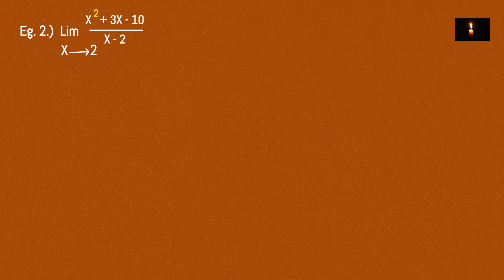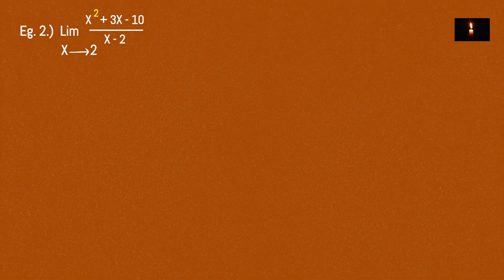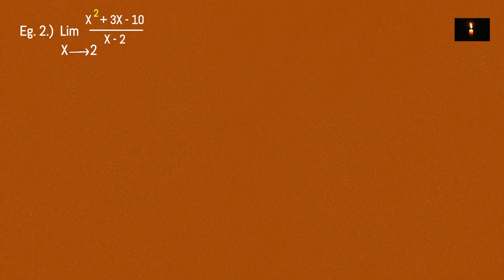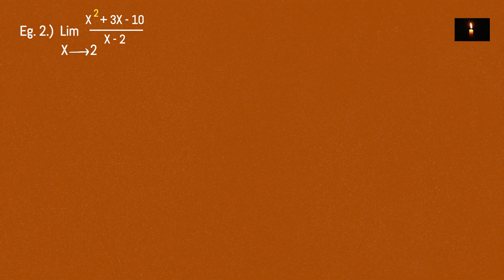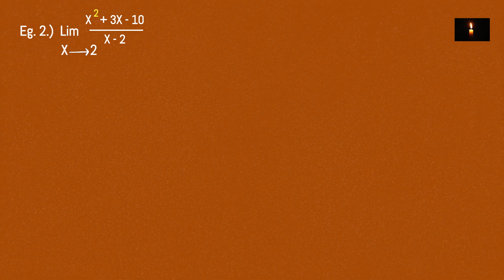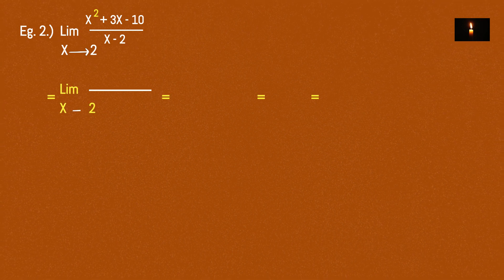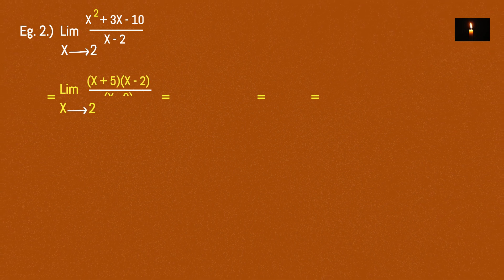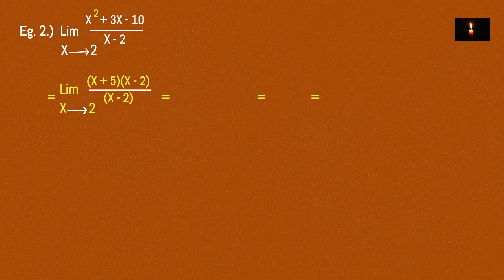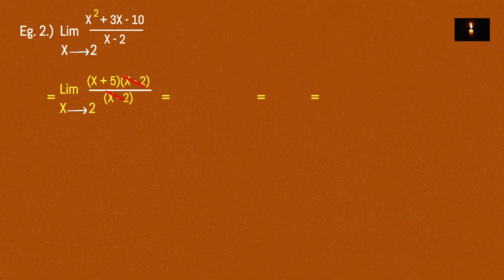The first part of the denominator is x minus 2. So x approaching 2 makes x minus 2 approach 0. The second part of the denominator is x squared plus 3x minus 10, which factors as x plus 5 times x minus 2. So x minus 2 is 0, and x plus 5 is 0.